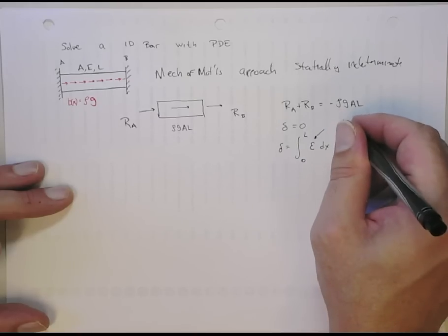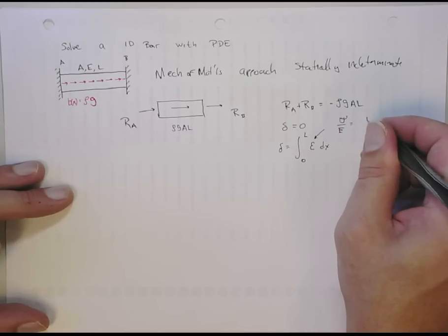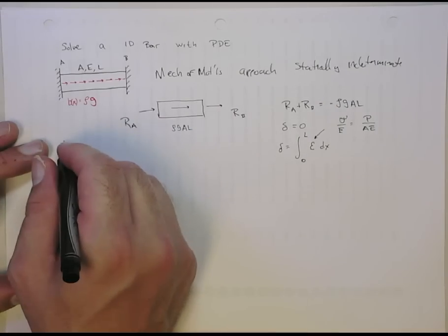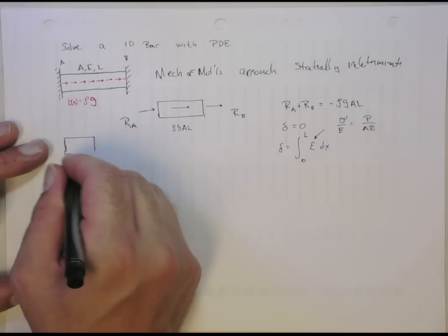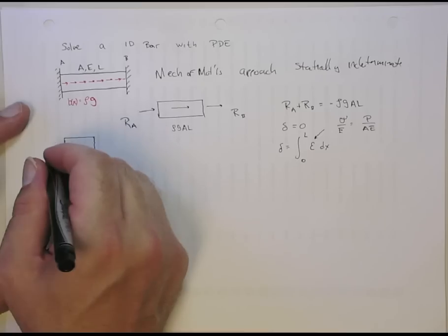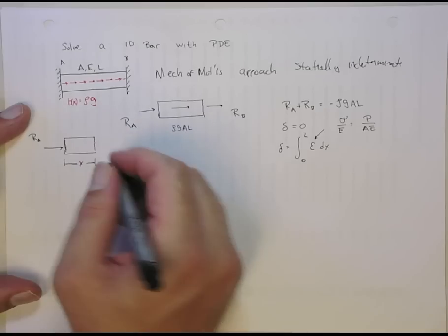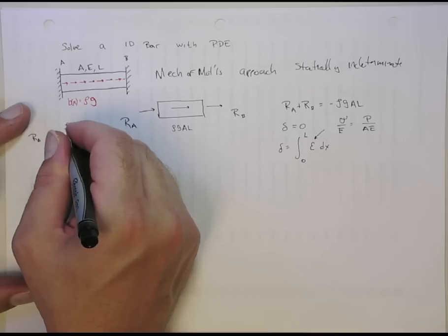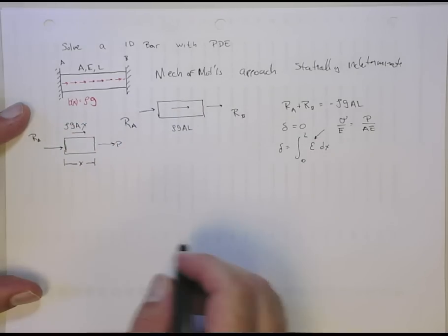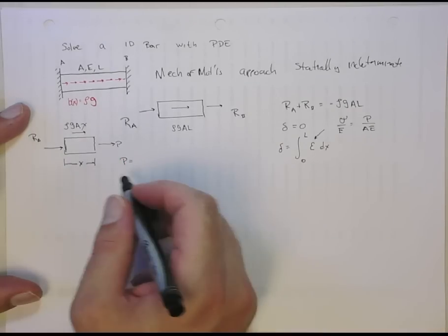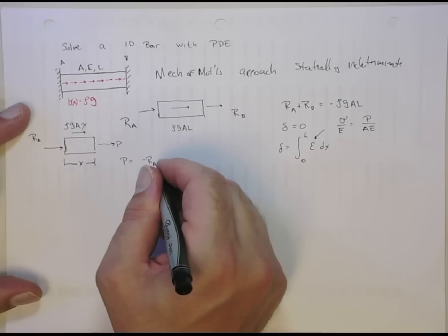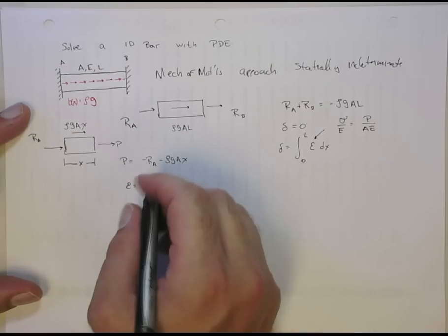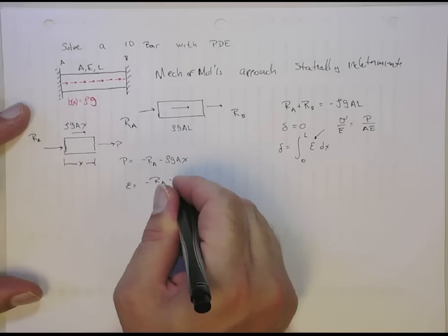We want to get the total elongation is the integral from zero to L of the strain. The strain is the stress divided by Young's modulus, which is equal to the internal force over the area times the length. And if we draw a free-body diagram at a general point x, we've got the reaction at A, and then we've got the internal force P, and then we've got the total net force of the body force, which is going to be rho g A times this length x. And so, that tells me that P is going to be equal to minus RA minus rho g A x. And so, from that, I can get that the strain is going to be minus RA minus rho g A x.